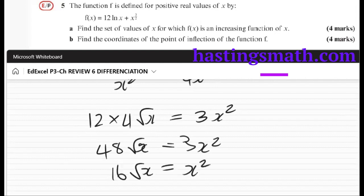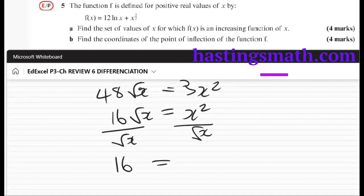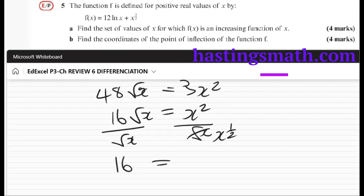Okay, so this is an interesting situation. We have 16 root x equals x squared. We want x's just on one side, so I'm gonna divide both sides by root x. So I get 16. If this was a half, it would end up being x to the 2 minus a half, which is, well let's follow that all the way: 2 is also 4/2 minus 1/2, so it'll be 3/2.